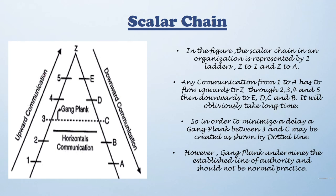Scalar chain — according to Fayol, the scalar chain is your line of authority, meaning a chain of superiors from the lowest to the highest rank. It is considered wrong when a subordinate breaks the line of authority. For example, if one wants to communicate with person A, they must follow the long chain through all the intermediate levels, and then the communication flows downwards back to A. In this whole long route, time is wasted and the message may not reach intact.